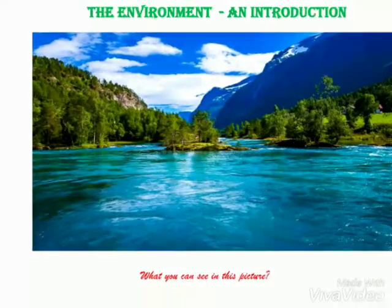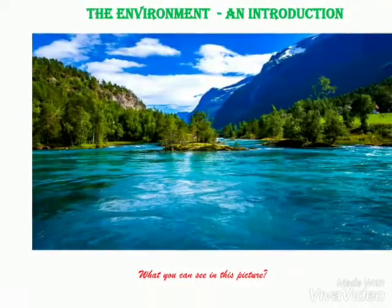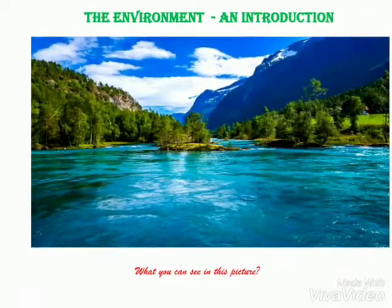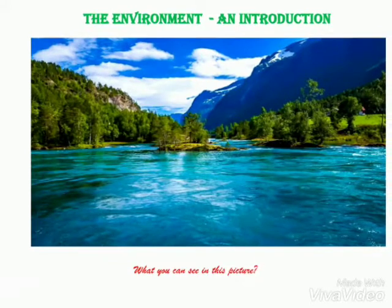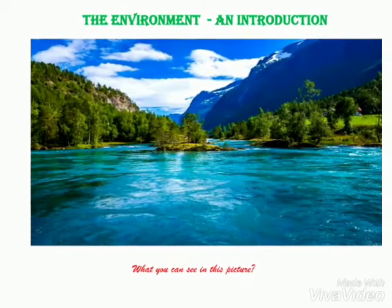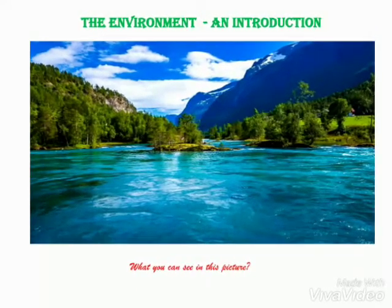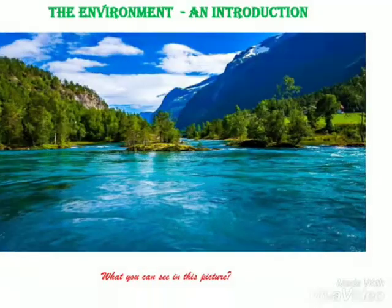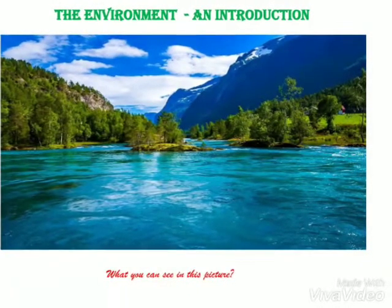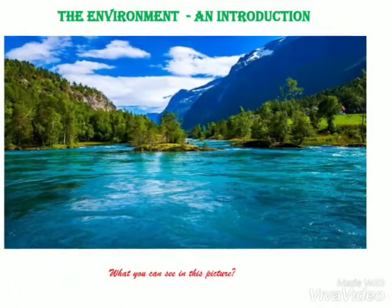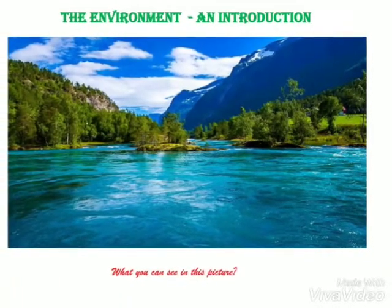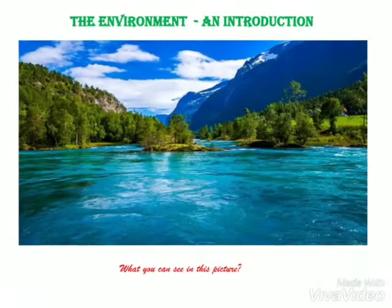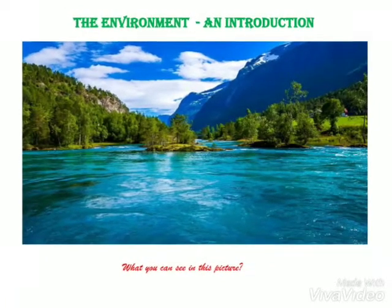There are few things which you cannot see but they are there — things like air, fish, animals and birds. These things around us: water, land, air, plants and animals are our surroundings.